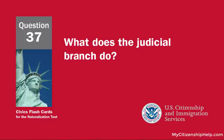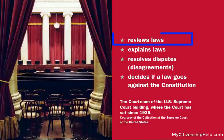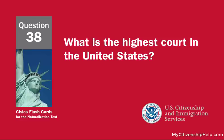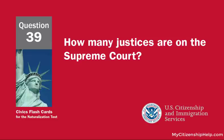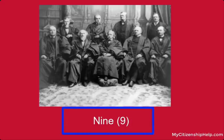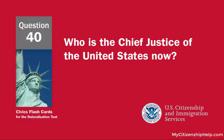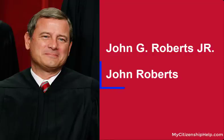What does the judicial branch do? Reviews laws. What is the highest court in the United States? The Supreme Court. How many justices are on the Supreme Court? Nine. Who is the chief justice of the United States now? John Roberts.